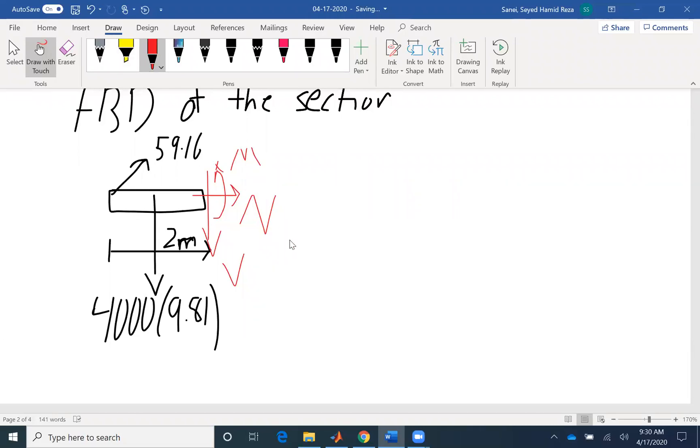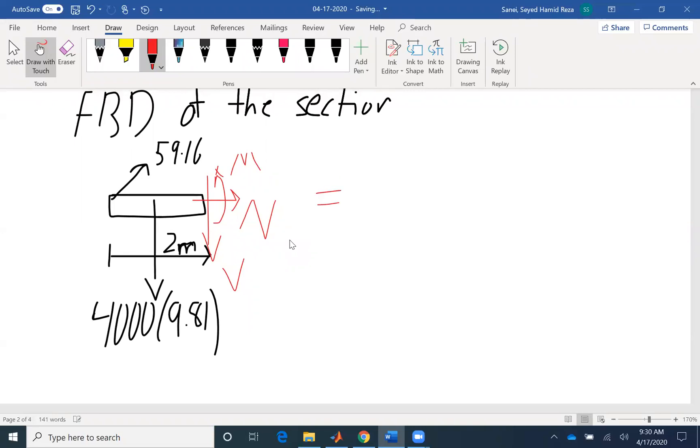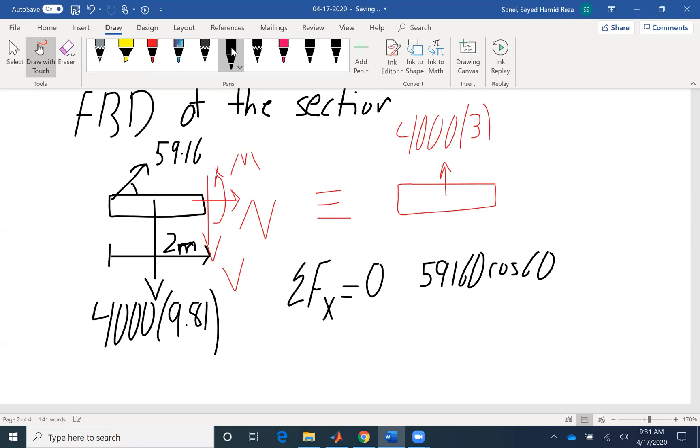So all I need to do now is to write my equations. Here we don't have equilibrium equations. Our section is not in equilibrium, but it's in motion. So we call it equations of motion. So I have my section. The only thing that my section has is the acceleration going upward. So summation of forces in X direction would be zero. There is nothing going on in X direction. So I can find a normal force here. So 59,16 cosine 60 will give me the X component. Cosine 60 plus N is positive equals zero. So I can find the X component, and that's our first unknown to be negative 29.58 kilonewtons. The negative sign would indicate that the direction that I assumed is incorrect.